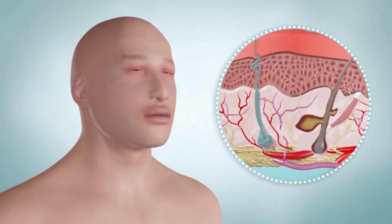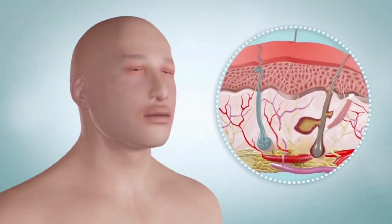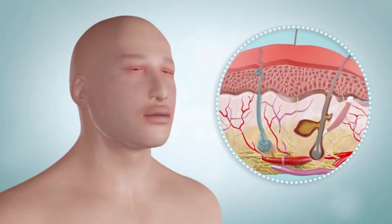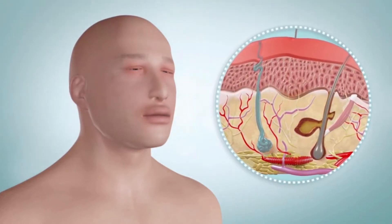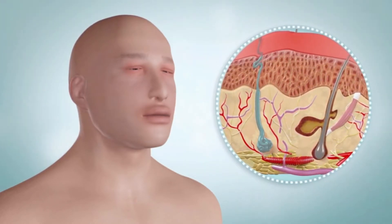The swelling you have with angioedema is caused by leaky blood vessels. Part of your blood called plasma leaks into the tissue under your skin and mucous membranes. This causes these tissues to swell.